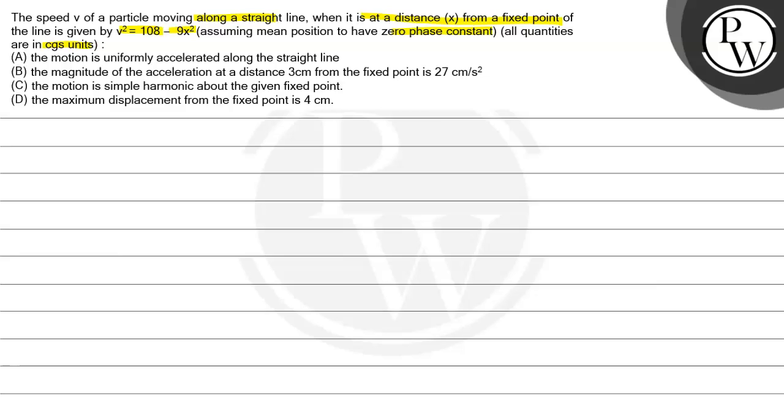The options are: A) the motion is uniformly accelerated along the straight line, B) the magnitude of acceleration at a distance 3 cm from the fixed point is 27 cm per second squared, C) the motion is simple harmonic about the given fixed point, or D) the maximum displacement from the fixed point is 4 cm.